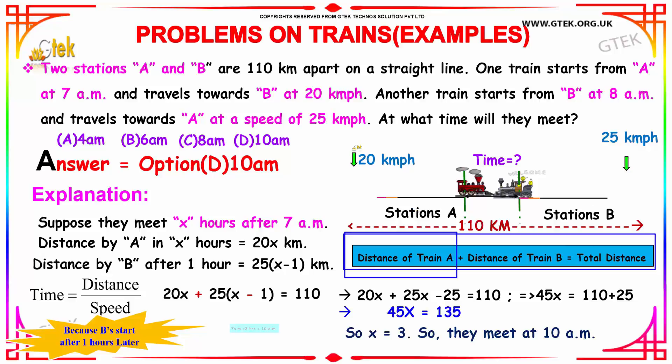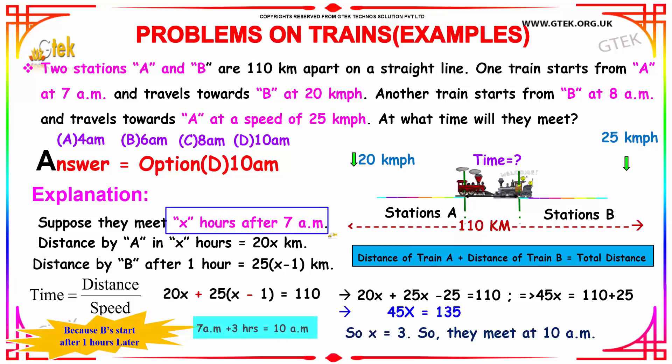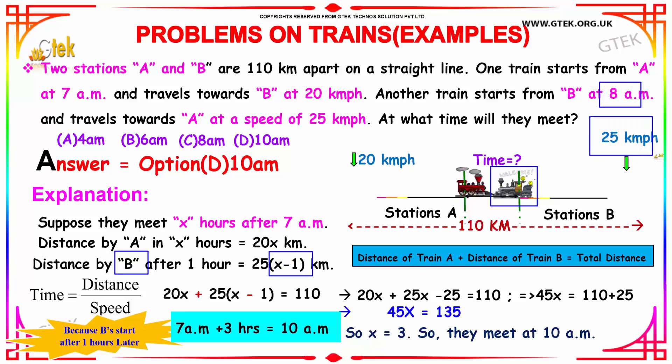I want to find the distance of train A, 20 km into the timing. Considering I got my timing as X hours, the train is meeting at X hours after 7 a.m. for this train A. So the distance traveled is speed 20 into the time X. That's the distance by A in X hours. And I need to calculate the distance by B which is started after 1 hour, X minus 1. Speed is 25 km per hour, 25 into X minus 1 km.